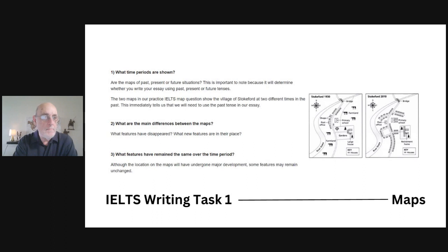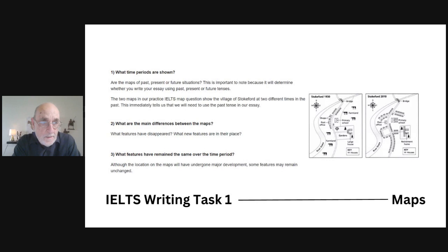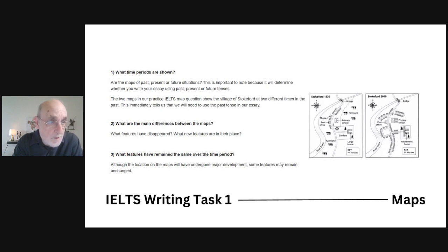As you look at the maps, start identifying the key parts you may want to write about. Take the note paper you're given and start preparing the content and outline for your essay. When you have two maps, you'll usually first want to identify the time periods — it could be past and present, two points in the past, or present and future.